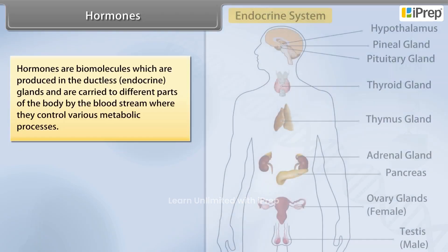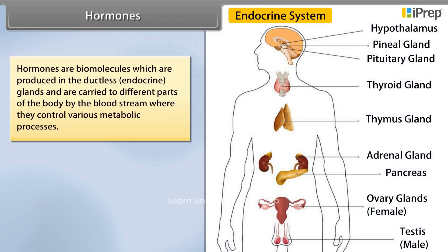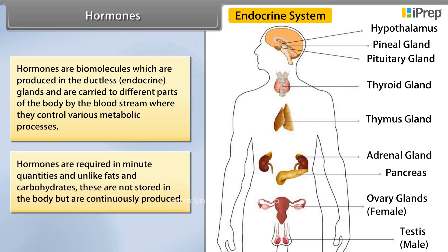Hormones are biomolecules which are produced in the ductless endocrine glands and are carried to different parts of the body by the bloodstream, where they control various metabolic processes. Hormones are required in minute quantities and, unlike fats and carbohydrates, these are not stored in the body but are continuously produced.